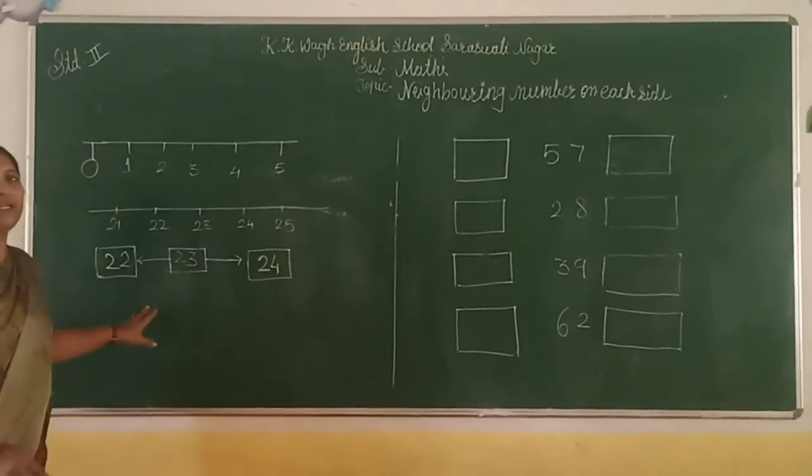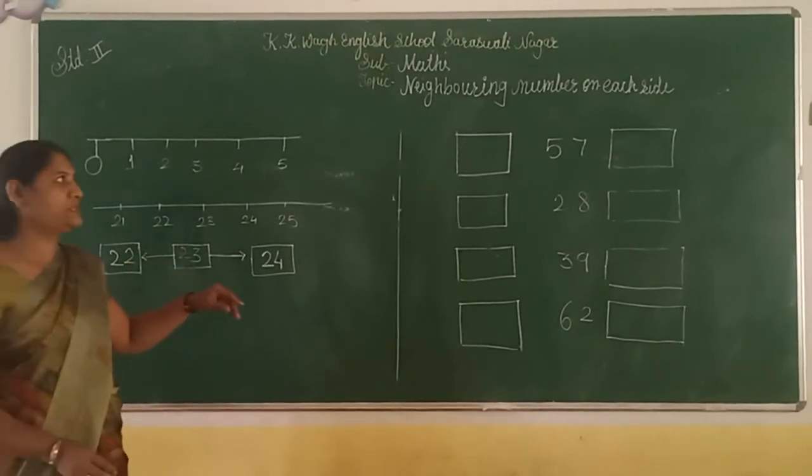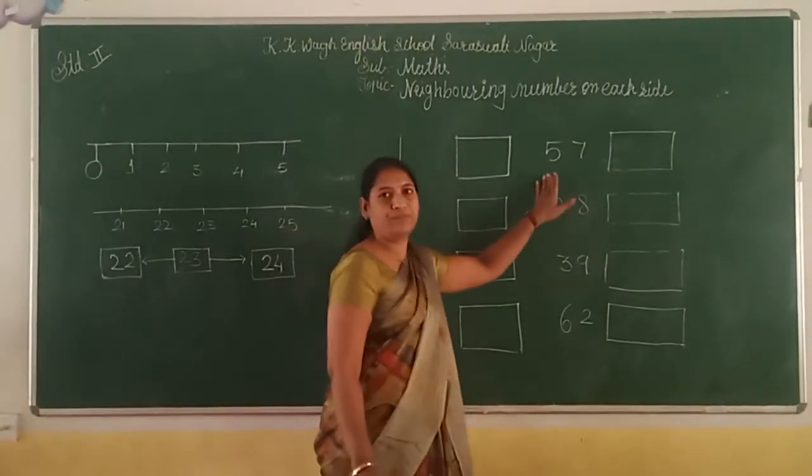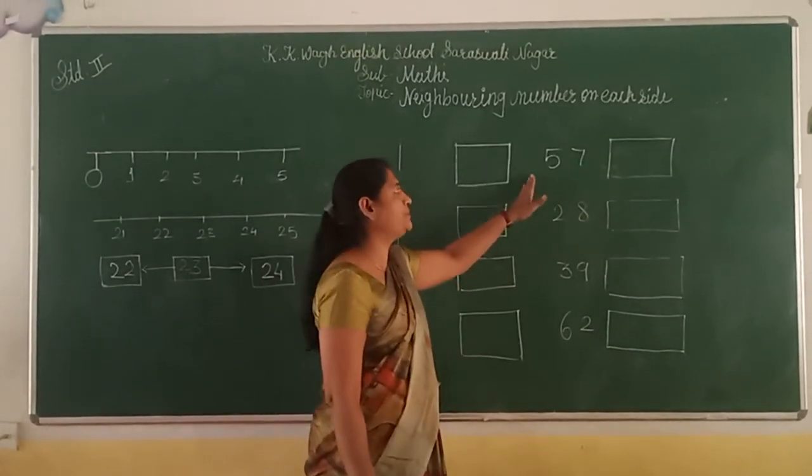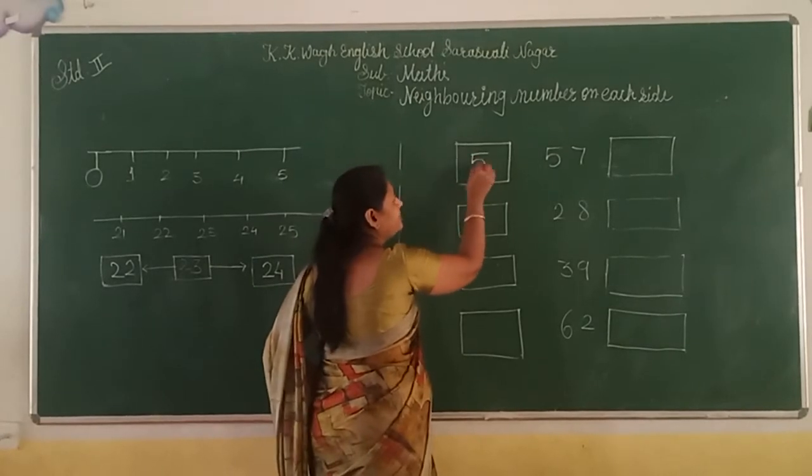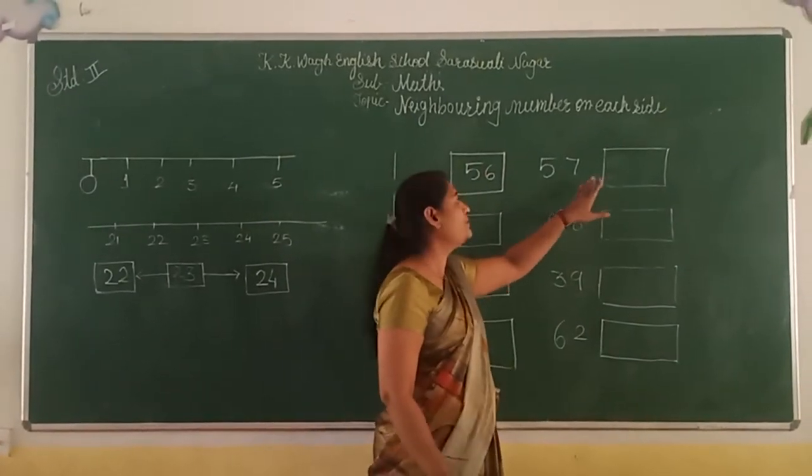Now related to this number line, we want to solve the sums, after and before numbers. Now here is the number 57. The before number of 57 is 56, and after 57 is 58.